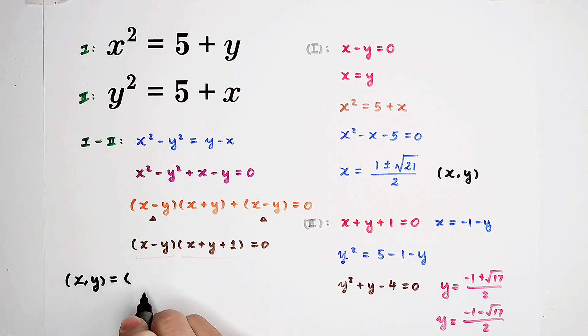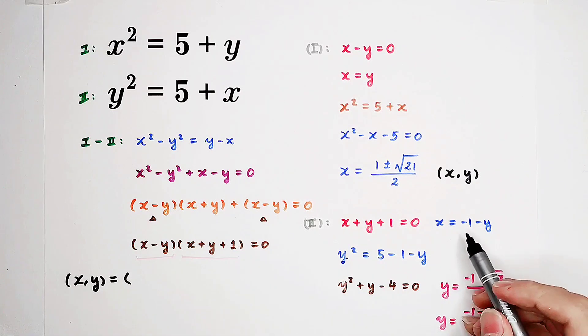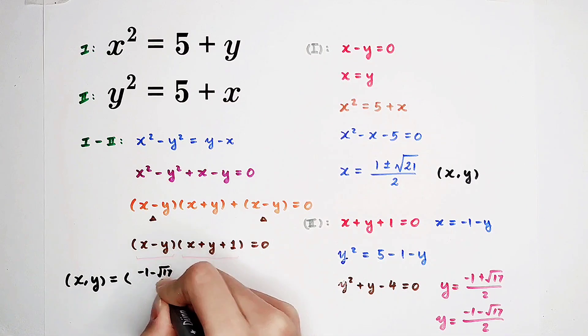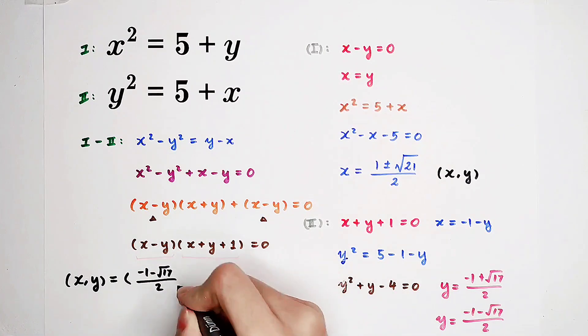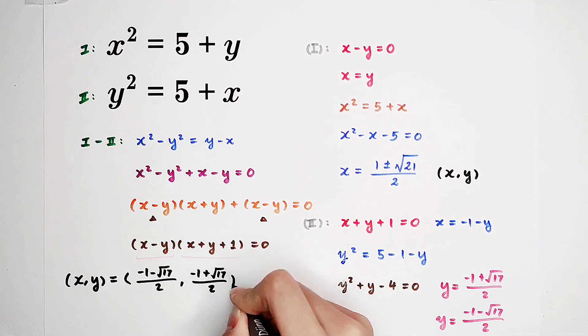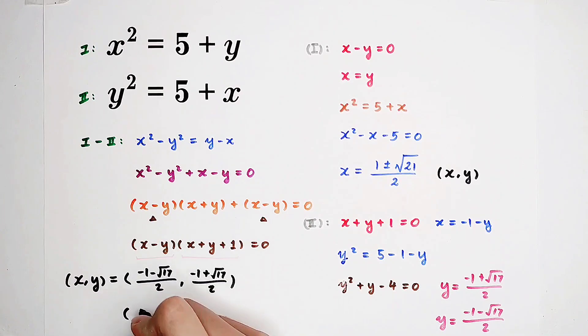So now, we can get, we actually have four pairs of solutions. The first one is negative 1 minus this one, it's actually negative 1 minus square root of 17 over 2. And negative 1 minus this guy is the conjugate of this one. And negative 1 minus square root of 17 over 2.